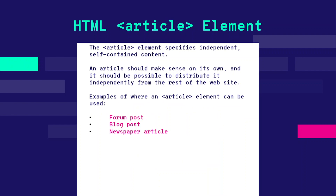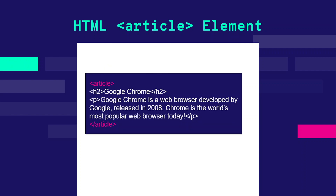The article tag is similar to section but is used for forum posts, blog posts, and newspaper articles. It is self-contained and independent from other content on the page — it's not related to the rest of the page's content. Just like the section tag, it contains headings and paragraphs, but it represents standalone content.